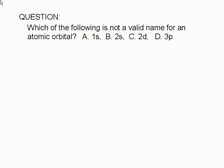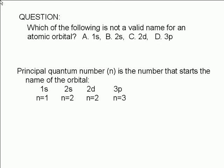One way to answer this question is to examine the quantum numbers implied by the name of the orbital. The principal quantum number is the number that starts the name of the orbital. So for the choices given here, the principal quantum numbers are 1 for 1s, 2 for 2s, 2 for 2d, and 3 for 3p.